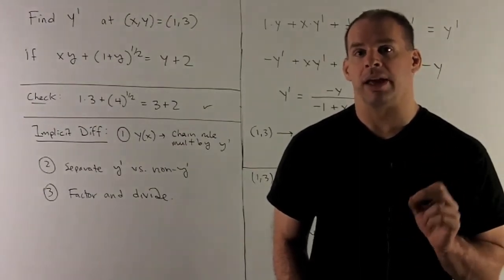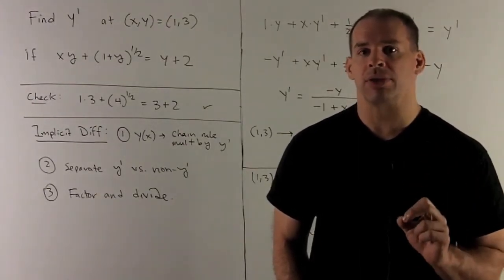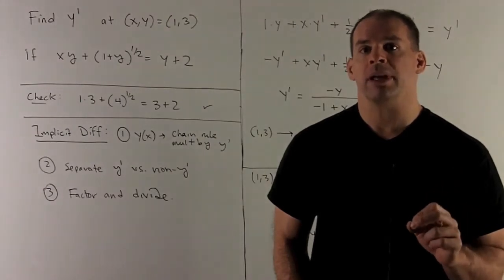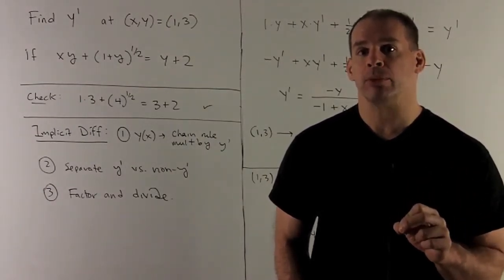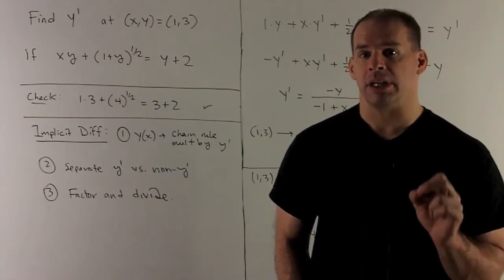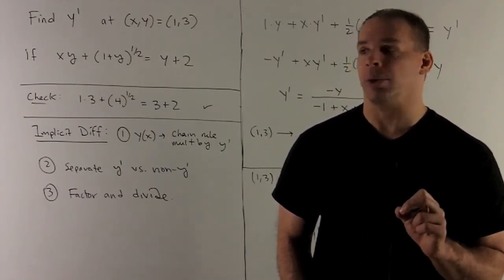Find y prime at the point xy equal to 1 comma 3 for the equation xy plus quantity 1 plus y raised to the 1 half equals y plus 2.